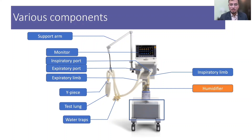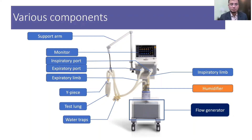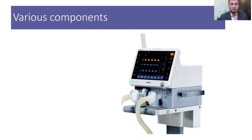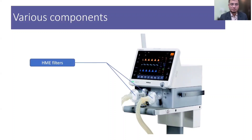Every ventilator has a flow generator unit inside which generates the inspiratory flow. This unit is driven by electricity and also has a built-in backup battery. To prevent cross-contamination and to conserve the heat and moisture of the patient's respiratory system, HME filters are connected to the inspiratory and expiratory ports.